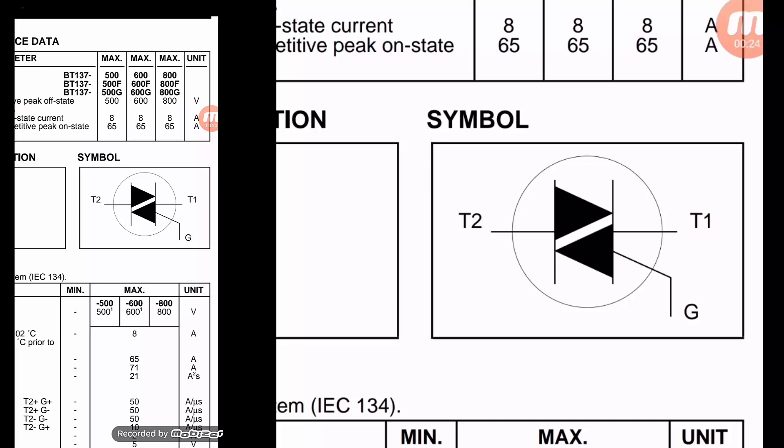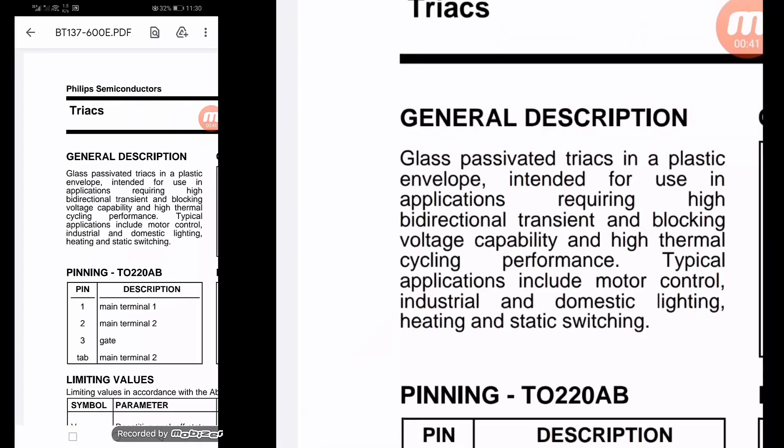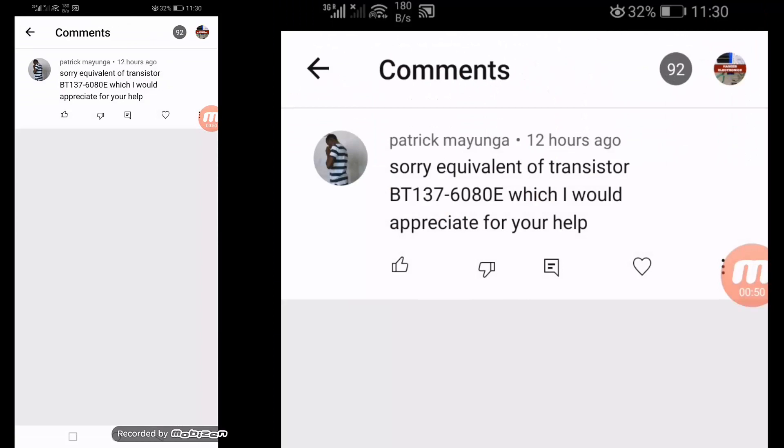Sometimes it is mentioned as MT1, MT2, and trigger or gate. It is a sensitive gate triac. Basically, this is a question from one of my viewers: sorry equivalent for transistor BT137-6080E.